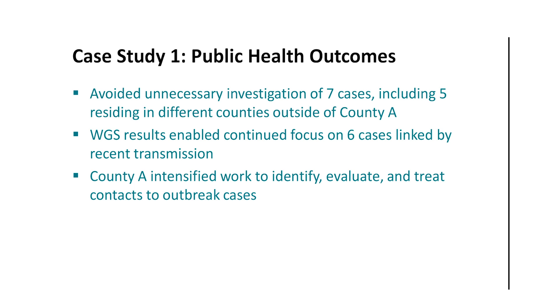So, what are some of the public health outcomes of this investigation? Hopefully, this case study illustrated how WGS helped us achieve some important public health outcomes and helped answer the final question we had at the start of the investigation. Where should we focus further efforts to interrupt further TB transmission? We were able to avoid unnecessary and resource-intensive investigation of seven cases residing in several different counties. WGS results enabled continued focus on six cases linked by recent transmission. County A intensified work to identify, evaluate, and treat contacts to outbreak cases.